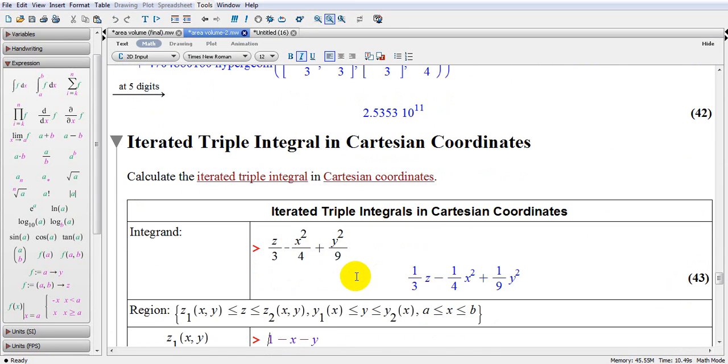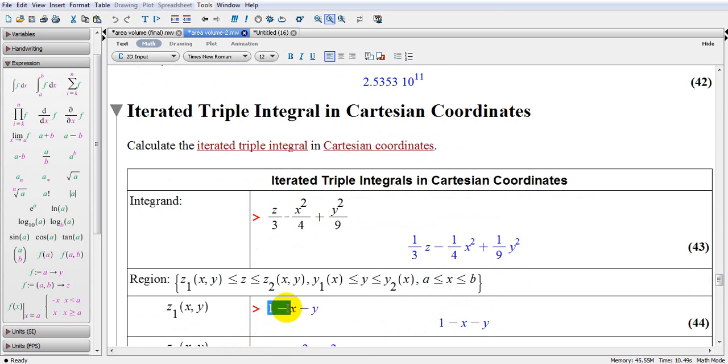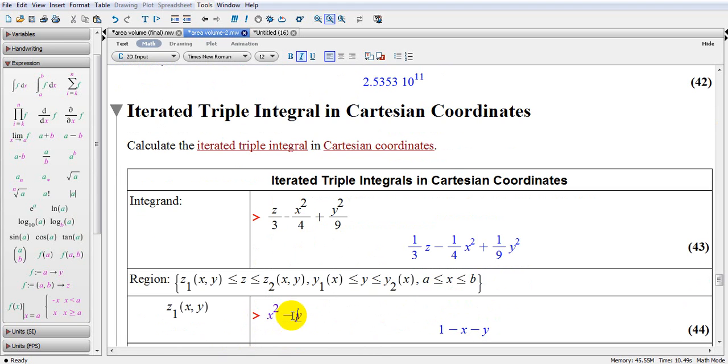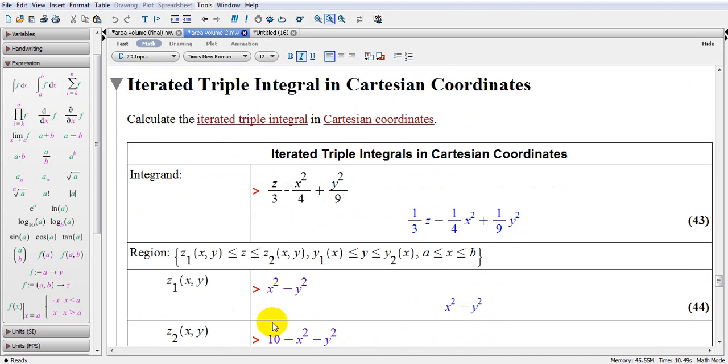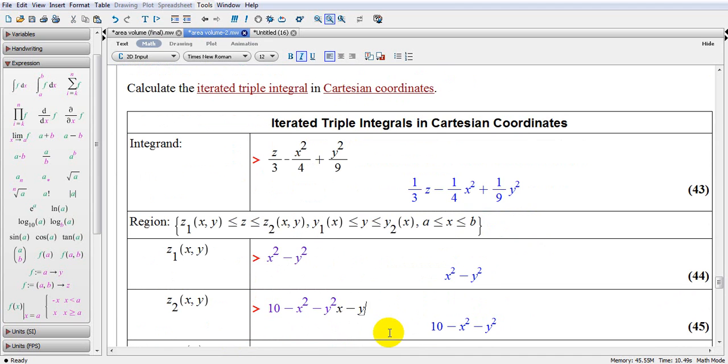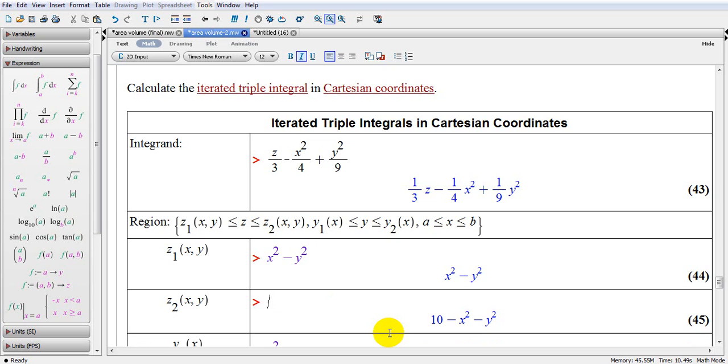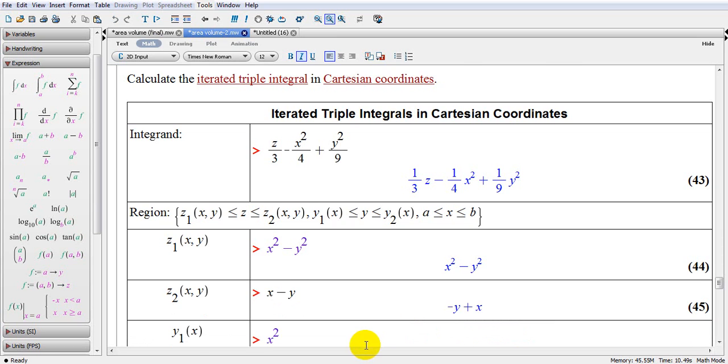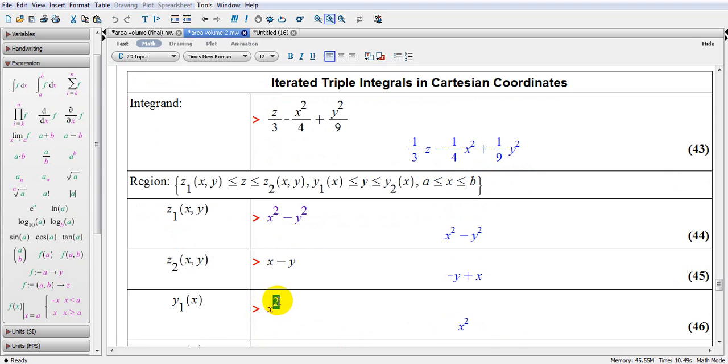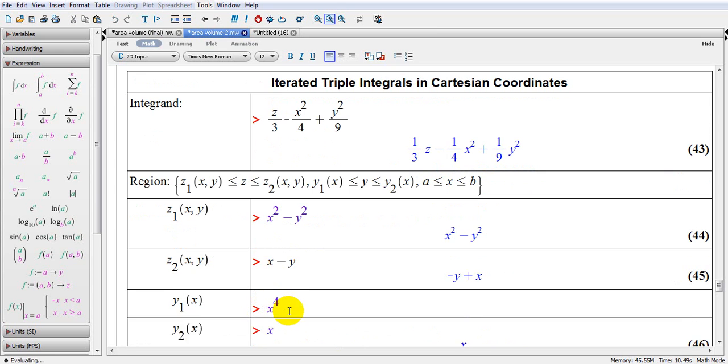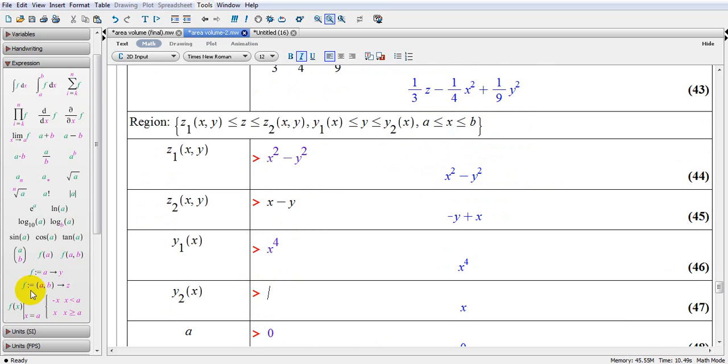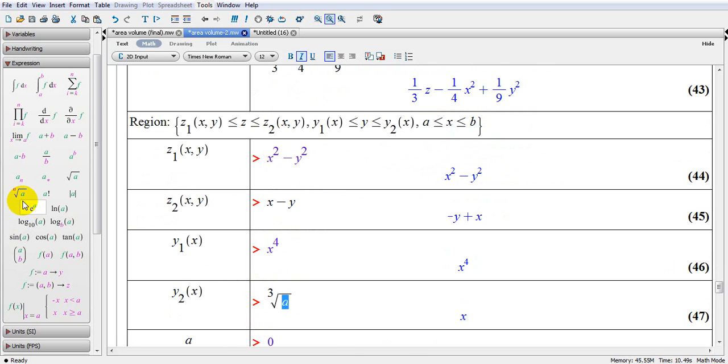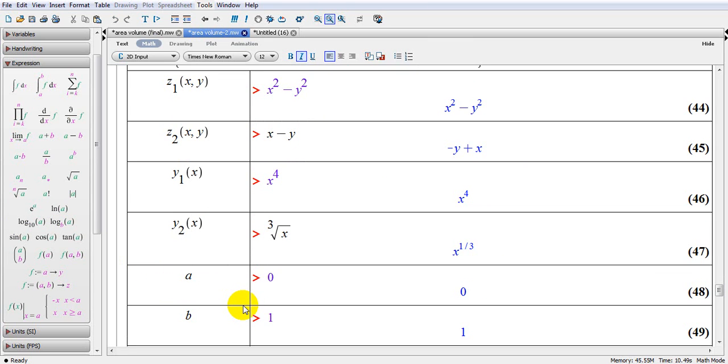Simply I go to the top here, I enter my function. After each step press enter. Now my Z is from X square minus Y square to X minus Y. Go back and erase the whole thing. My Y is X to power 4 to root 3X.